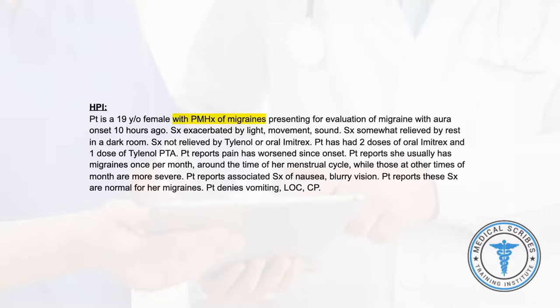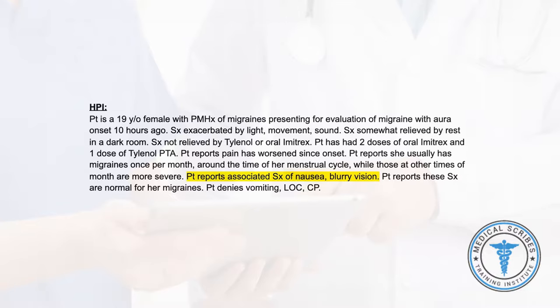You should document that her current episode is a migraine with aura, including details about migraines related to her menstrual cycles and that those unrelated tended to be more severe. Include that movement, sound, and light worsened her pain, while resting in a quiet dark room helped. Note she had taken Tylenol and two oral doses of Imitrex prior to arrival, none of which relieved her symptoms. Record associated symptoms of vision changes and nausea. The patient reports all these symptoms are normal for her — she denies weakness, loss of consciousness, and chest pain.